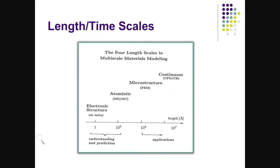Now let's talk about the length and time scales. As I said earlier in the previous module, we are talking about 40 orders of magnitude from the atomic level to large objects like galaxies. Looking at that aspect, we are now concentrating on the microscopic part of the system, and we are looking at four different length scales.